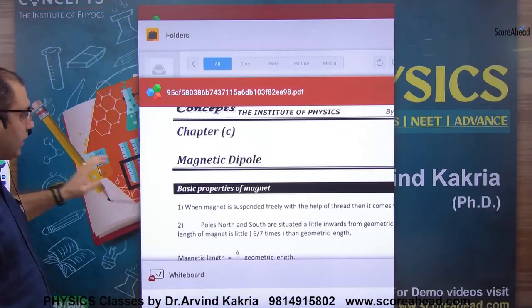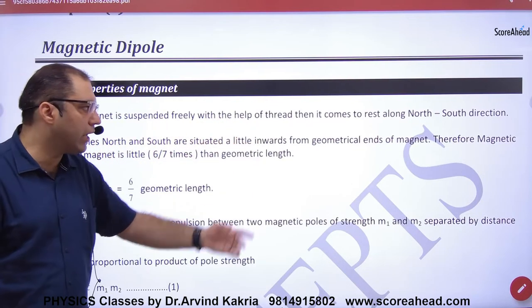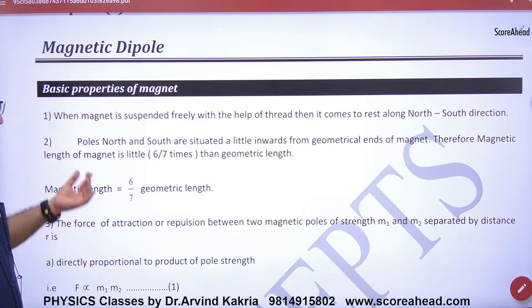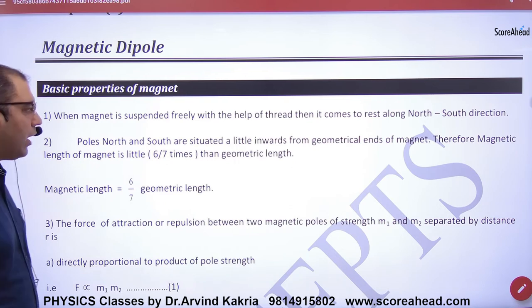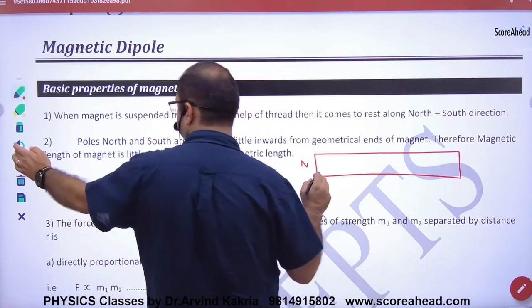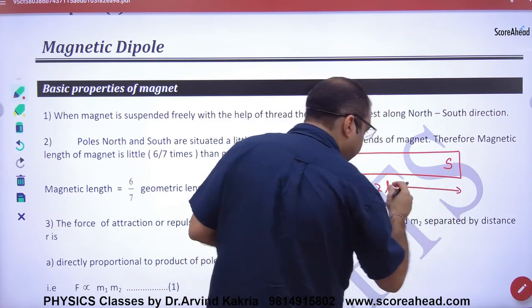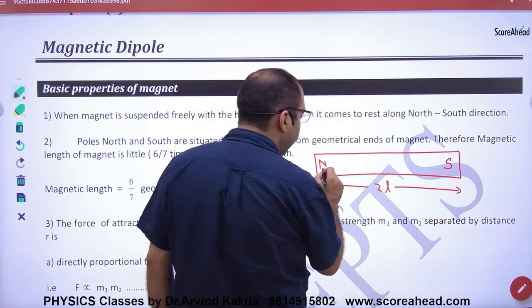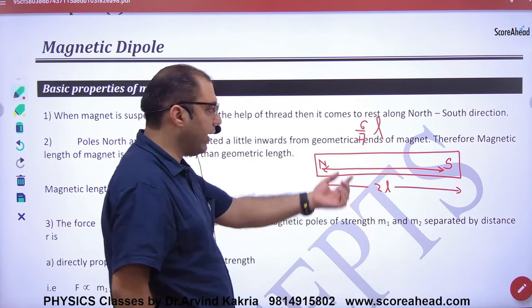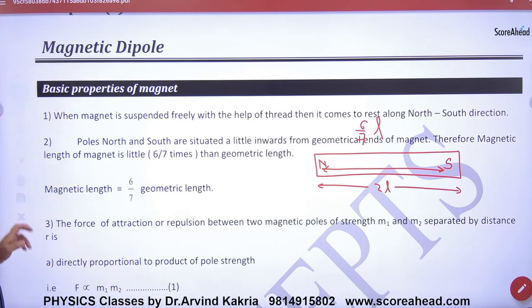There are some more properties of the bar magnet. The bar magnet has a north end, and it has a south end. The geometrical length is 2L. But the poles are actually situated a little inward from the ends — separated by approximately 6/7 times L on each side. This property is not much used in problems, but it is good to know the poles are slightly inside the magnet.